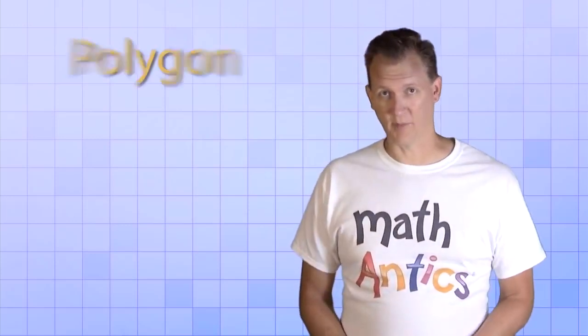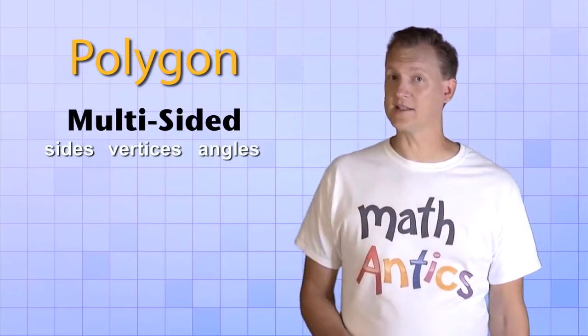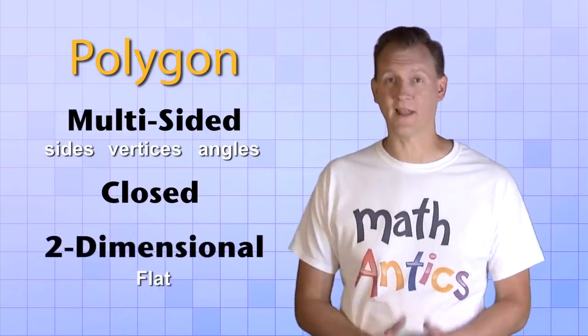All right then, we now have a specific definition of a polygon. A polygon is a multi-sided shape that has sides, vertices, and angles. A polygon is a closed shape. And a polygon is a two-dimensional or a flat shape.